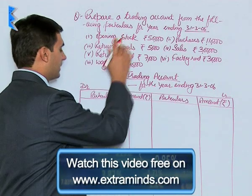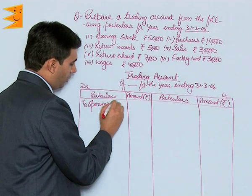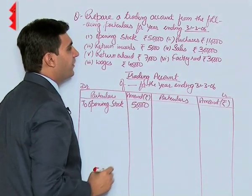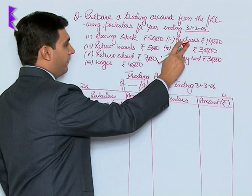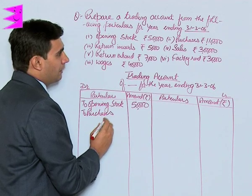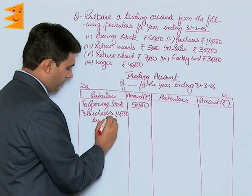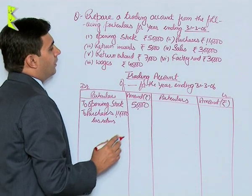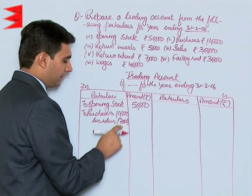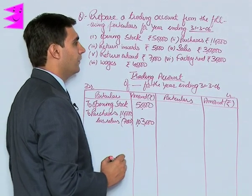Let us start by putting these items. The first item on the debit side is opening stock: rupees 50,000. Then purchases are 1,10,000 less return outwards of 7,000, so 1,10,000 minus 7,000 gives us net purchases of 1,03,000.